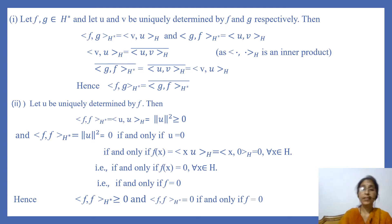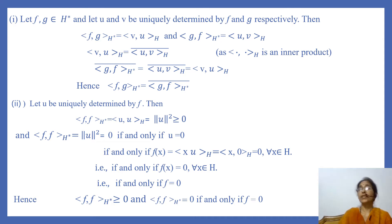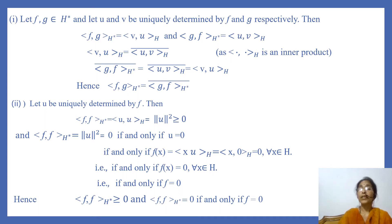For the second condition, let U be uniquely determined by F. Then ⟨F, F⟩ = ⟨U, U⟩ = ||U||², which is always greater than or equal to 0. Furthermore, ⟨F, F⟩ = ||U||² = 0 if and only if U = 0, which means F(x) = ⟨x, U⟩ = ⟨x, 0⟩ = 0 for every x in H. That is, if and only if F is the zero function, i.e., F = 0.